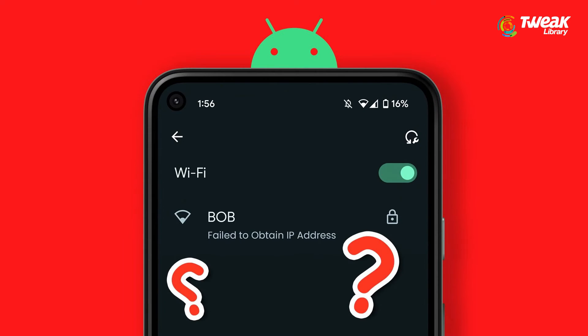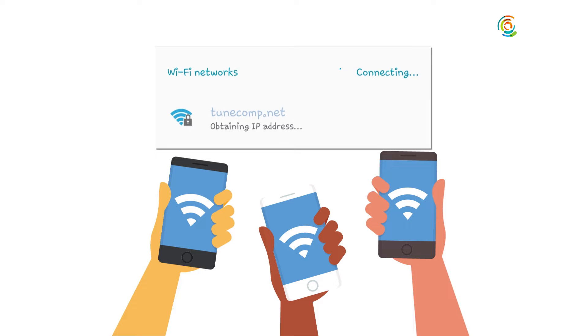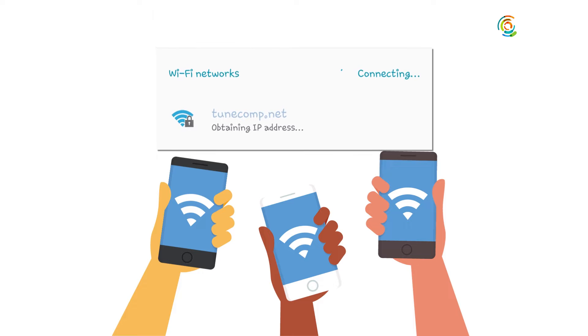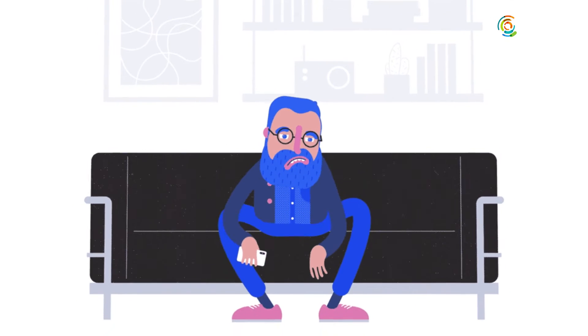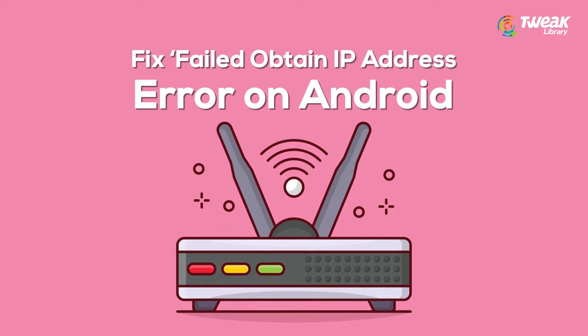Is your Android phone showing the failed to obtain IP address error while connecting to a Wi-Fi network? It happens when your phone fails to acquire an IP address from the router. Don't worry — watch the video till the end and we'll tell you how to fix the issue.